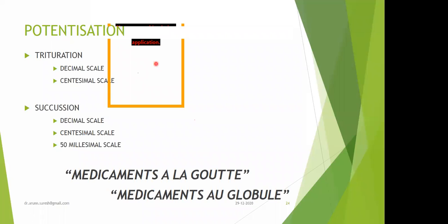As per HPA, the vehicle is divided into 3 different parts — 1:2:3 to 1:2:5, or 11:33:55 for centesimal scale. This is an important variation to learn: as per Hahnemann it is divided into 3 equal parts, and as per HPA it is in the ratio 1:2:3 to 1:2:5.